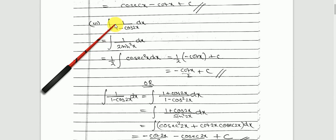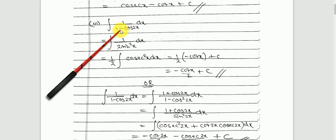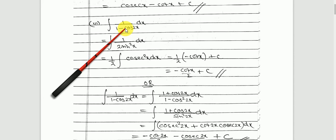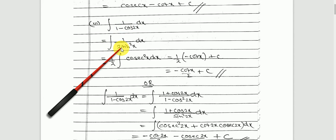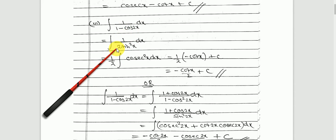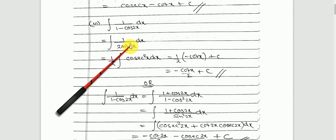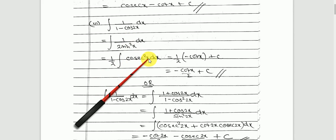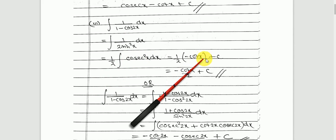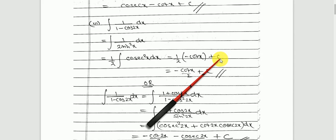Next, you have to integrate 1 upon 1 minus cos 2x. The denominator 1 minus cos 2x can be written as 2 times sin squared x. So the factor of 1/2 is a constant and comes out, and 1 upon sin squared x can be written as cosec squared x. The integration of cosec squared x is minus cot x, plus c.